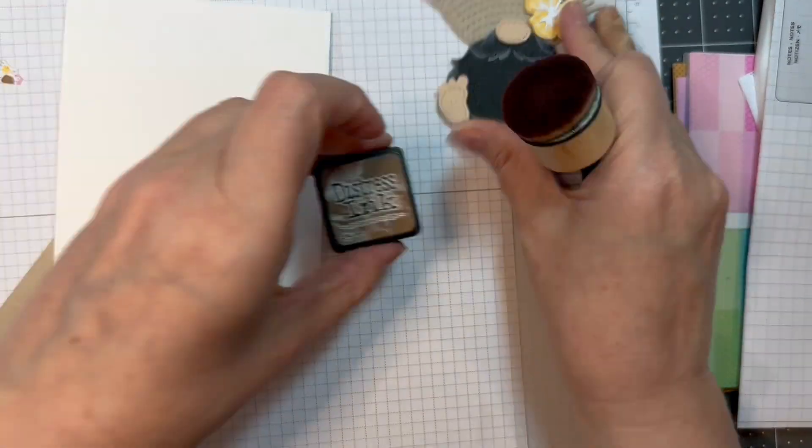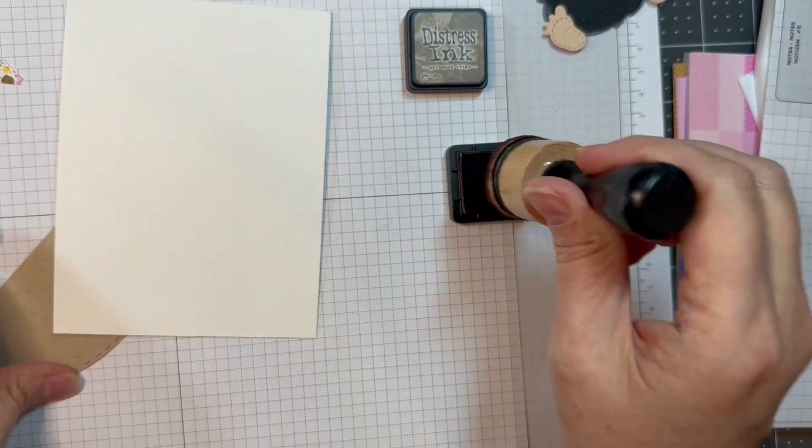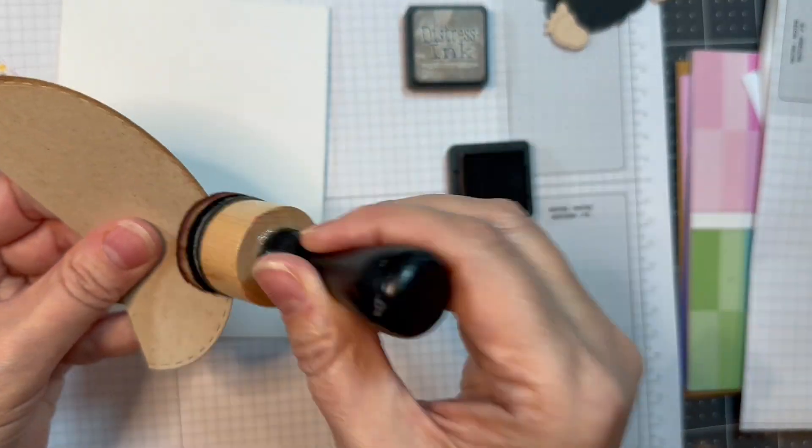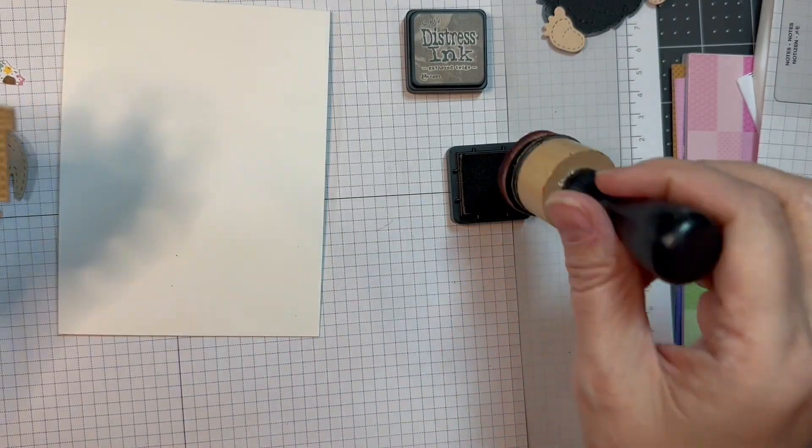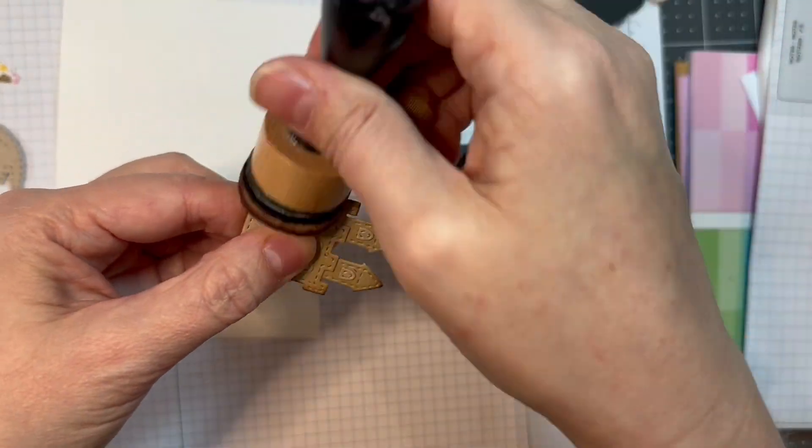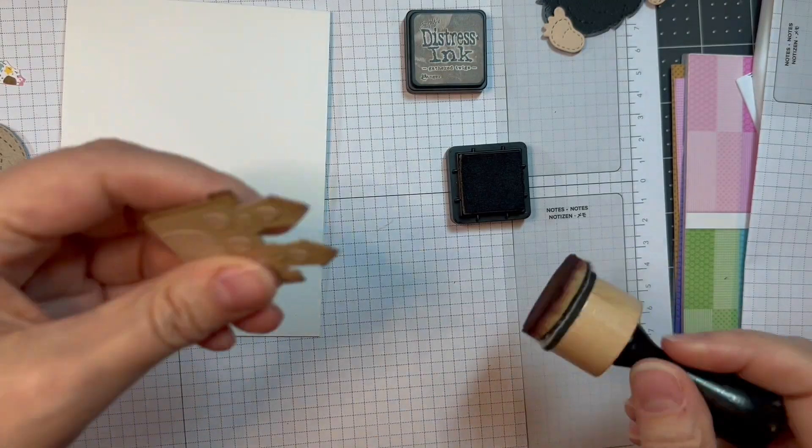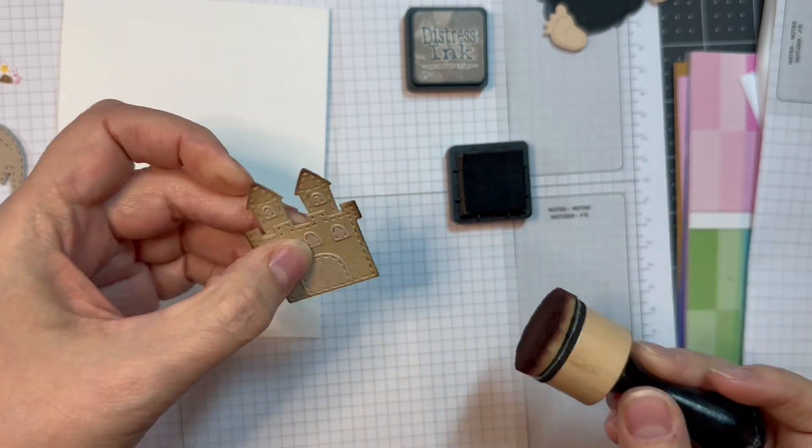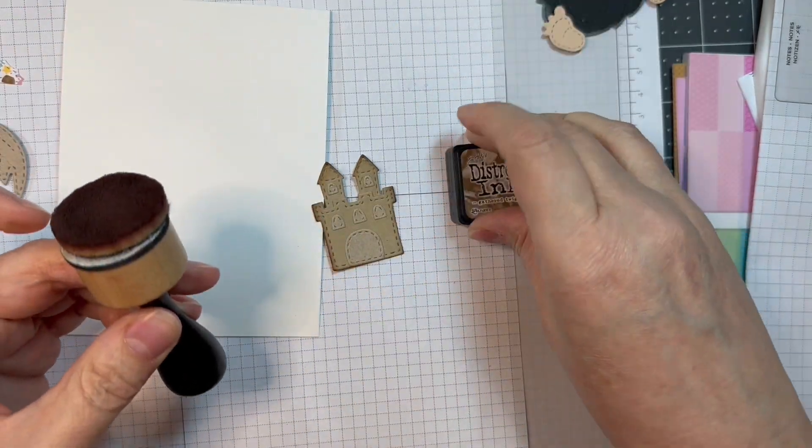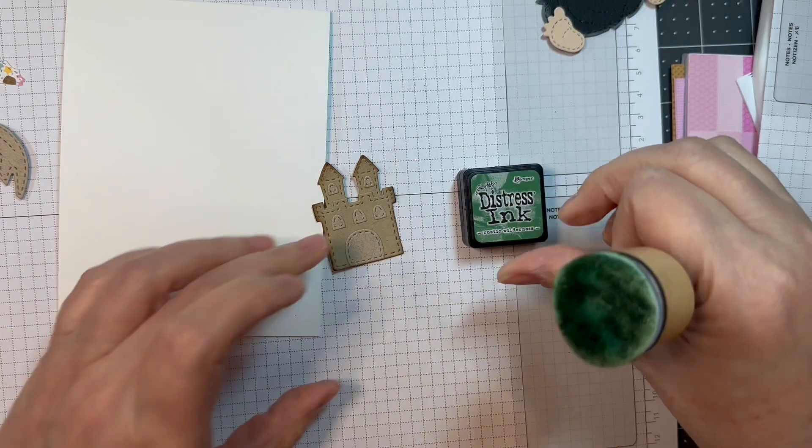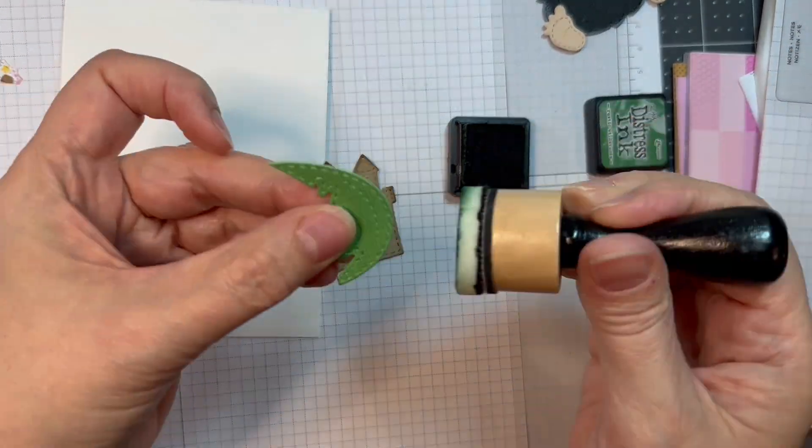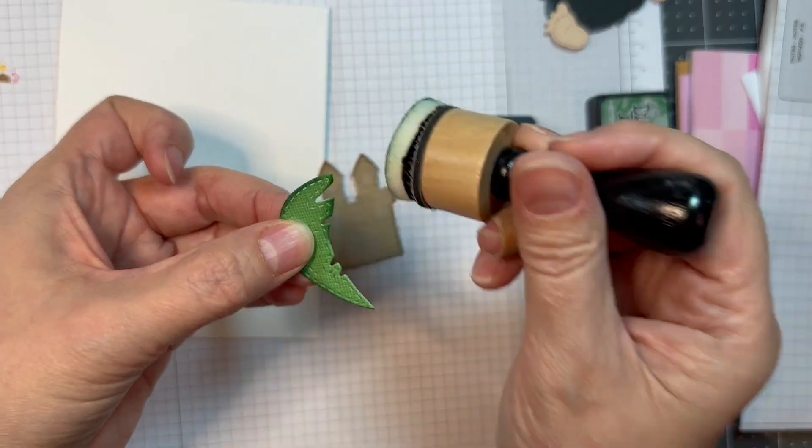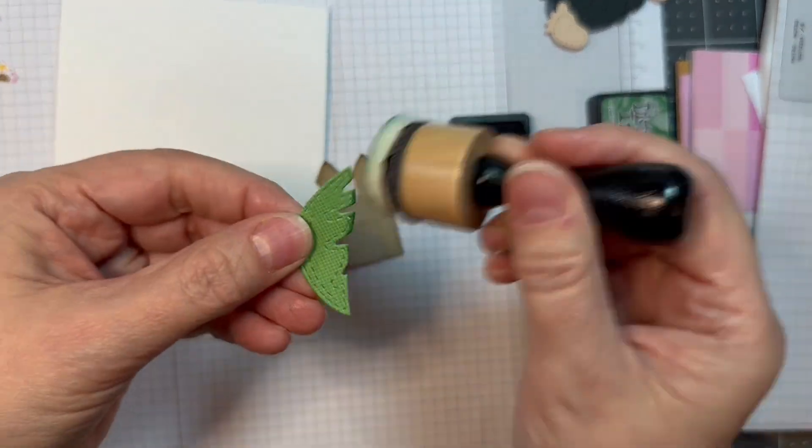I did put together that little gnome on the Gnome Dies Tiki Add-ons assembly video, so check that out. I went ahead and cut out the largest oval out of Desert Storm cardstock and I'm using gathered twigs along the edge. I did assemble that little castle on the Gnome Dies Beach Add-ons assembly video. That was assembled out of Paper Tray Ink Craft Cardstock.